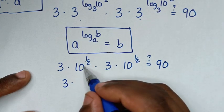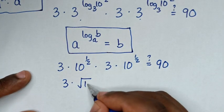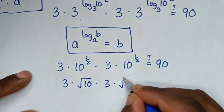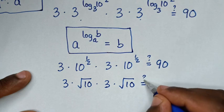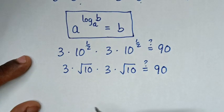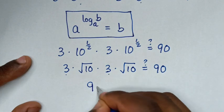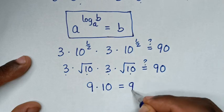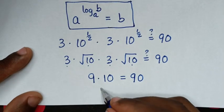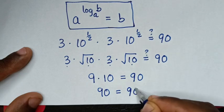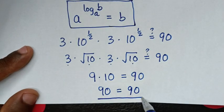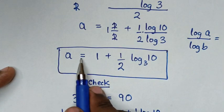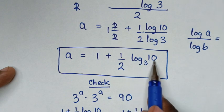Then 3 times 3 is 9, and √10 times √10 is 10, so we get 9 times 10 which is 90, equal to 90. The left side and right side are equal, confirming it is true. So a = 1 + ½·log₃(10).